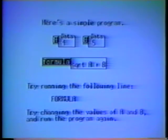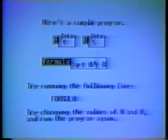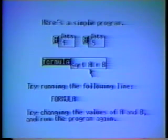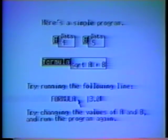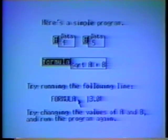Here we have two numbers called a and b, and a formula that computes the square root of a plus b. If we run the command formula, Boxer shows us the value returned. Here a is 4 and b is 5, so the answer is 3.